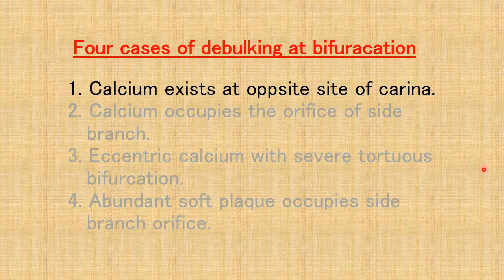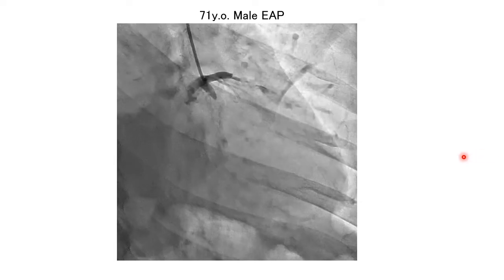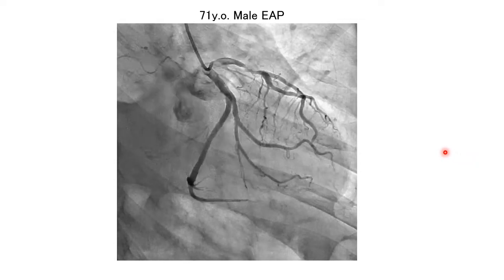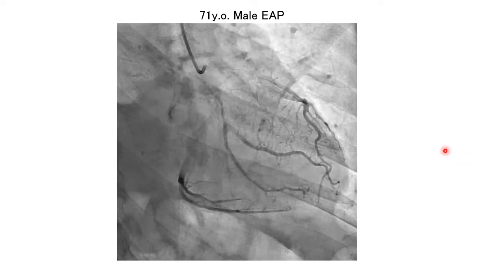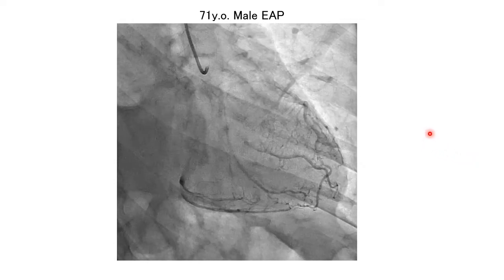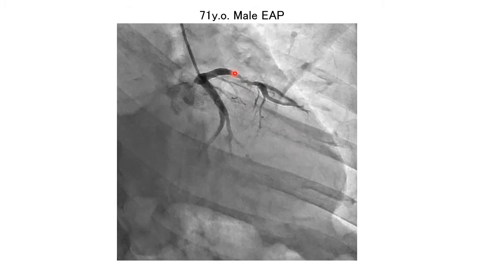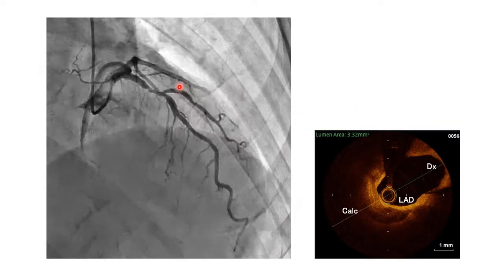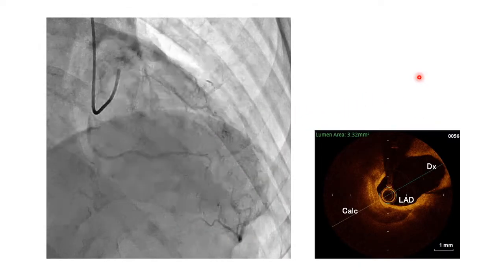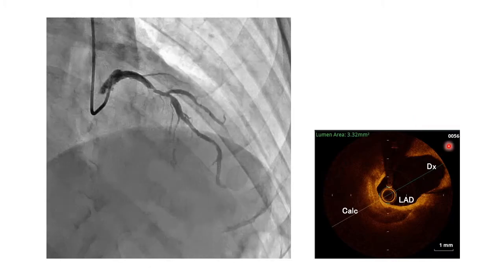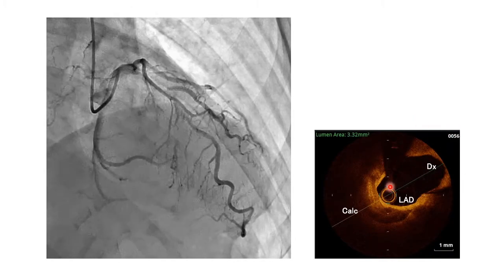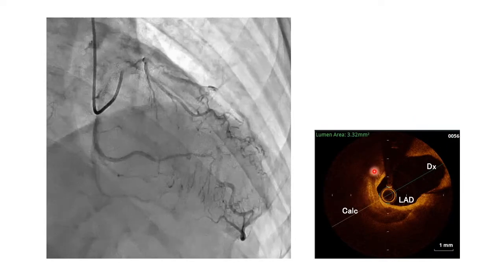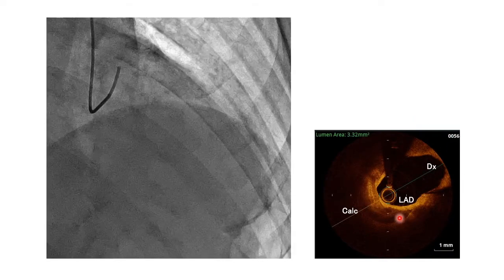The first case is calcium existing at the opposite side of carina. The case is a 71-year-old male with effort angina. You can see the severe stenosis in LAD involving a diagonal branch. OCT shows calcium at the opposite side of the diagonal branch.